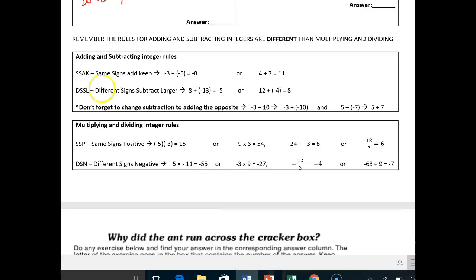Here are the rules. Same signs, add, keep. Different signs, subtract larger. Those are the addition subtraction rules. Don't confuse these with the multiplication dividing rules. Same signs positive, different signs negative. You don't have to worry about which number is bigger or smaller in this one. Here, you just have to say, hey, do I have the same signs? Great. They're positive. Do I have an even amount? Great. They're positive. Here, do I have just one negative or an odd amount of negatives? Great. It's negative.